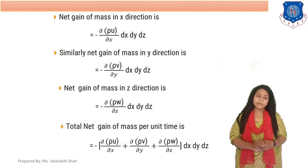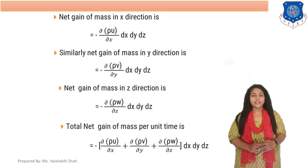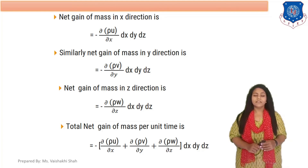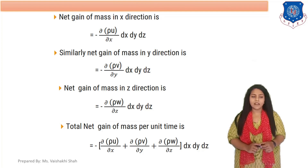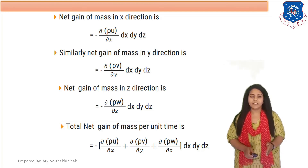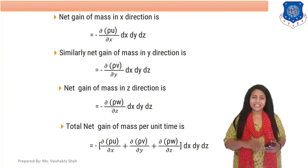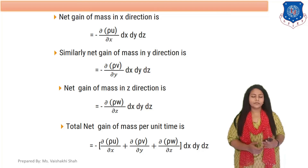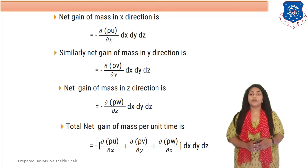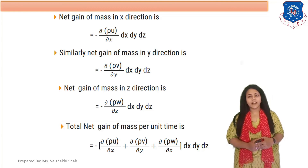Similarly, we can write the total net gain in mass in the y direction as −(∂ρv/∂y)·dx·dy·dz, and the total net gain of mass in the z direction as −(∂ρw/∂z)·dx·dy·dz. You do not need to re-derive these for y and z; they follow the same approach as the x direction.